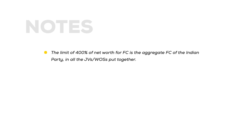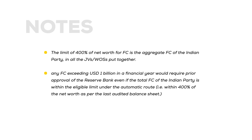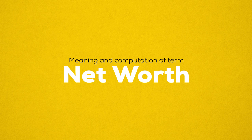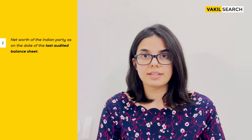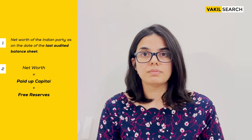Two important notes here. First, this 400% limit is an aggregate of all joint ventures and wholly owned subsidiary companies together — meaning a maximum of 400% of net worth of any Indian party can be invested across all joint ventures and wholly owned subsidiaries. Second, if the financial commitment of any Indian party exceeds USD 1 billion in any financial year, RBI approval will be required. Regarding net worth computation, it will be taken from the previous audited balance sheet and will be a combination of free reserves and paid-up capital.